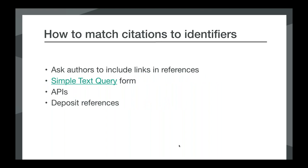You can also have your authors include DOIs in their manuscripts. We do have members that do this, and we have some public interfaces for looking up DOIs that authors can use. Depending on what kind of content you produce, many authors already cite using DOIs when compiling reference lists or using reference managers. Asking them to do this for you can save you some work, but that depends on how much you are already asking from your authors. We also have some user interfaces and APIs, and I'll go over the basics for those now.